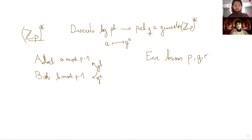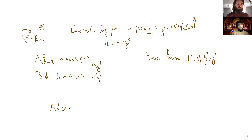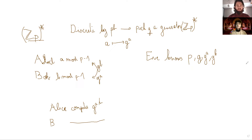So Eve, who is listening on the conversation, knows G to the A and G to the B. But the point is Alice, knowing the value of G to the B, can compute the value of G to the AB. And Bob is able to do the same thing. But Eve doesn't know A and doesn't know B. So in order to compute the value of G to the AB, she would have to perform something pretty much equivalent to finding the value of A or B from G to the A and G to the B — and it is our assumption that this is impossible in reasonable time.